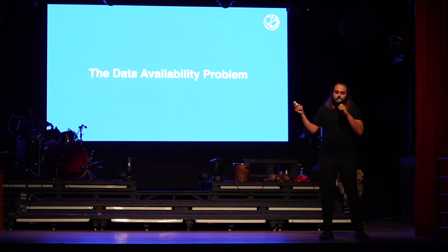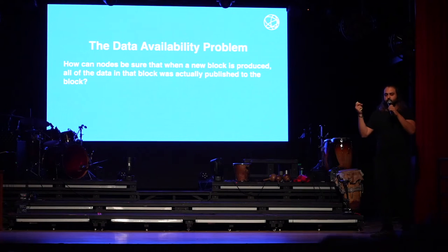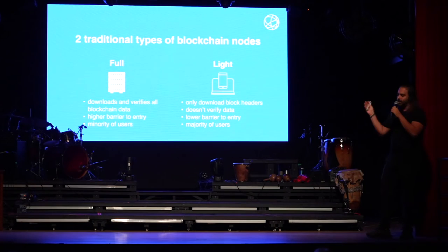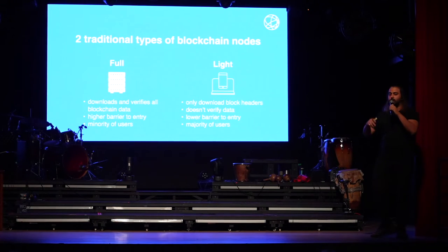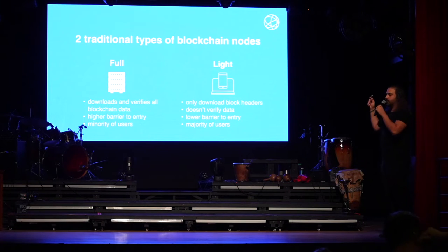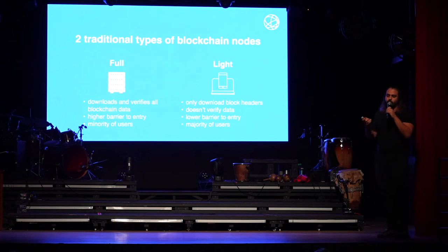So what is the data availability problem? It's how can nodes be sure that when a new block is produced, the entirety of the transaction data has been published. There are two different types of blockchain nodes. A full node downloads and verifies all the transaction data in a block, but has a higher barrier to entry - you need a lot more RAM, computing power, and storage. It's run by a minority of users. With a light node, you only download block headers - the current design as seen in Ethereum. You don't verify the data, it has a lower barrier to entry, you can run it on a Raspberry Pi or your phone, and it can be used by a majority of users.